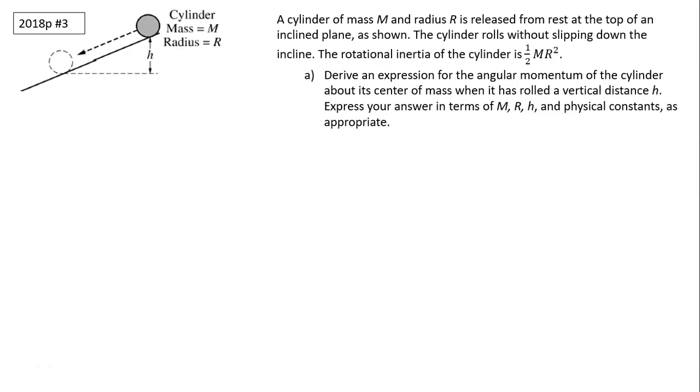The rotational inertia of the cylinder is one-half mr squared. Part A: Derive an expression for the angular momentum of the cylinder about its center of mass when it has rolled a vertical distance h. Express your answer in terms of m, r, h, and the physical constants as appropriate.